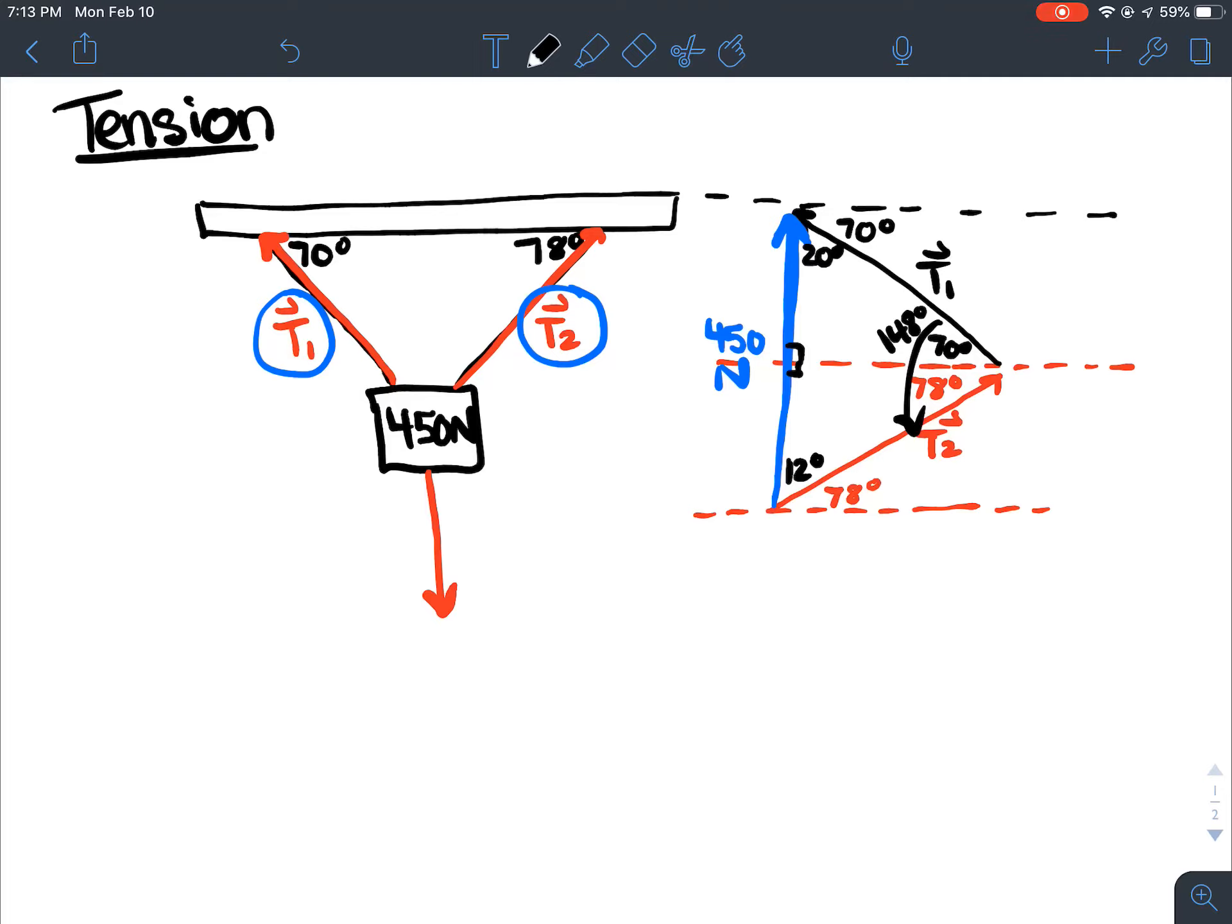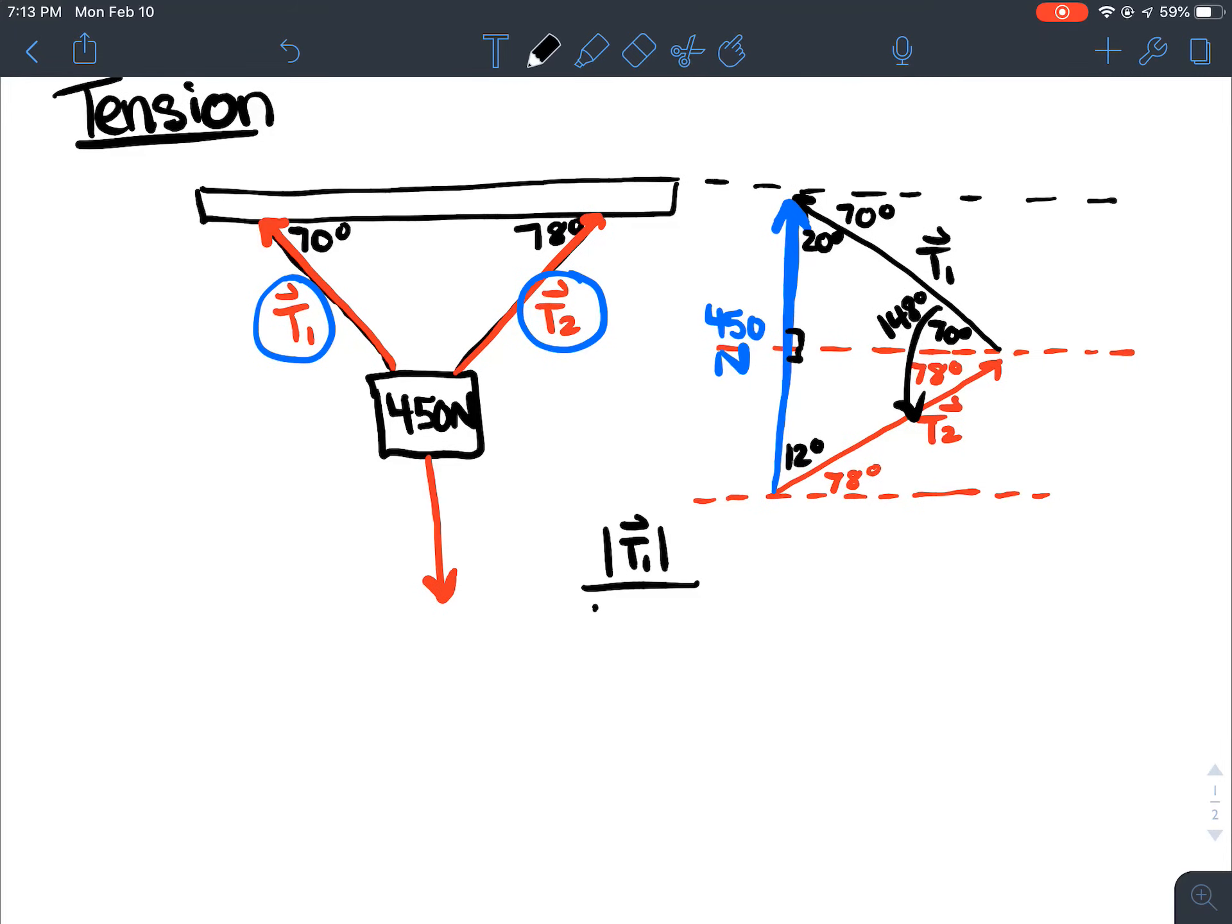So I'm adding up my two tensions. So now I can just do even sine law. So if I wanted to find the magnitude of vector T1, I could do T1 over sine 12 equals 450 over the sine of 148. And then using whatever you use, cross multiplying or dividing and multiplying by sine 12. I'm going to just do this on my calculator now. Times sine 12. I get 177 newtons.